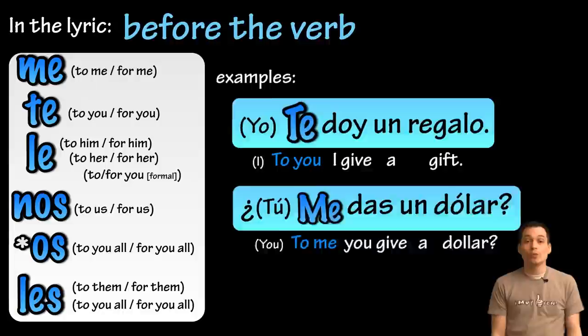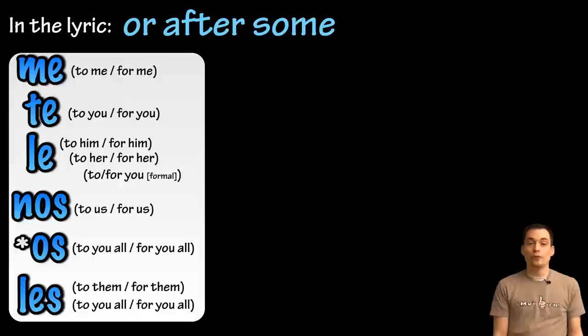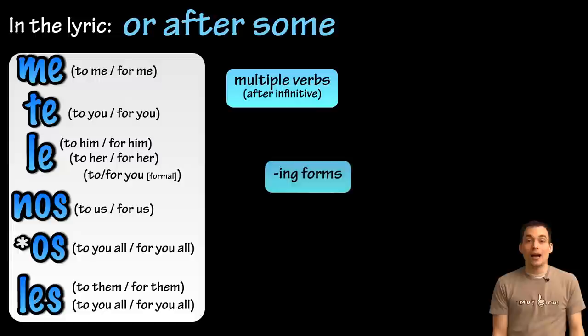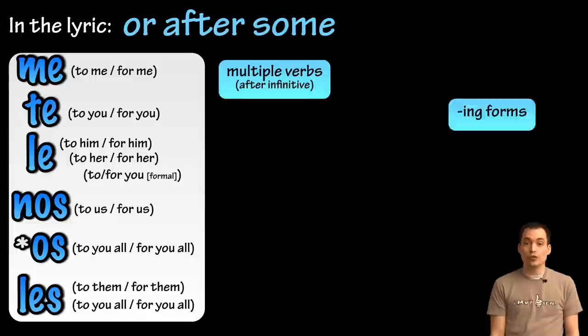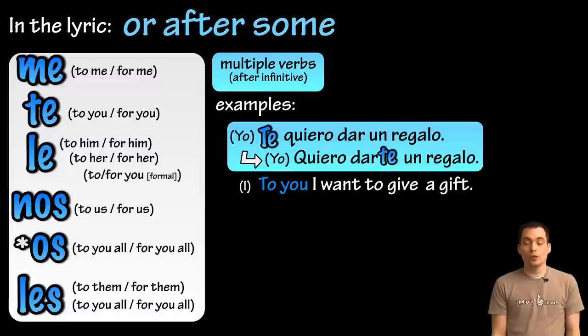The last lyric says 'or after some.' While these pronouns can go at the beginning of the verb phrase, they can also be attached to multiple verbs after the infinitive, the -ing form, and affirmative commands. For example, 'te quiero dar un regalo' — putting it before means 'I want to give you a gift,' literally 'to you I want to give a gift.' But notice we have another verb with an R on the end — the infinitive. I can attach the te on the end instead: 'quiero darte un regalo.' This sounds a lot more like English order, and both are used and understandable.